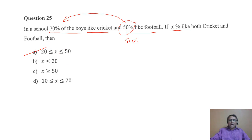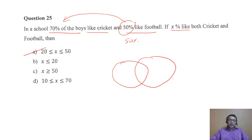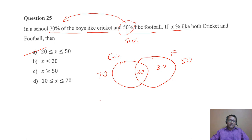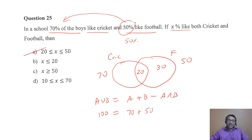For minimum, draw the Venn diagram. 70% like cricket, so 30% do not like cricket. Minimum, those 30% should be the ones who like football. But overall football is 50%, so the common (intersection) will be 20%. You can also use the formula: A union B = A + B − A intersection B. Total is 100%, A is 70 (cricket), B is 50 (football), solve to get 20 — which is the minimum. Either way you get option A.